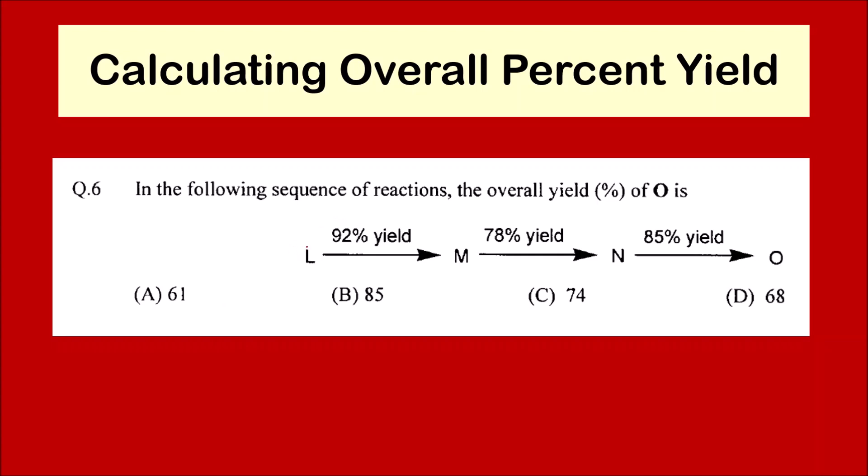For example, in this reaction there is one reactant L which is forming M, which is again reacting to form N, and the final product is O. That is a reaction having multiple steps.